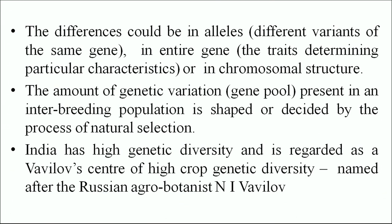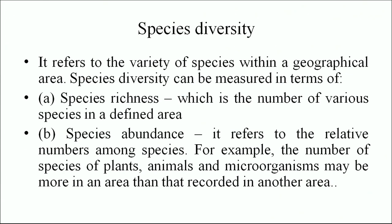India has high genetic diversity and is regarded as a Vavilov center of high crop genetic diversity, named after the Russian agro-botanist N.I. Vavilov. Species diversity refers to the variety of species within a geographical area. It can be measured in terms of species richness — the number of various species in a defined area — and species abundance, which refers to the relative numbers among species. For example, the number of species of plants, animals and microorganisms may be more in one area than that recorded in another.